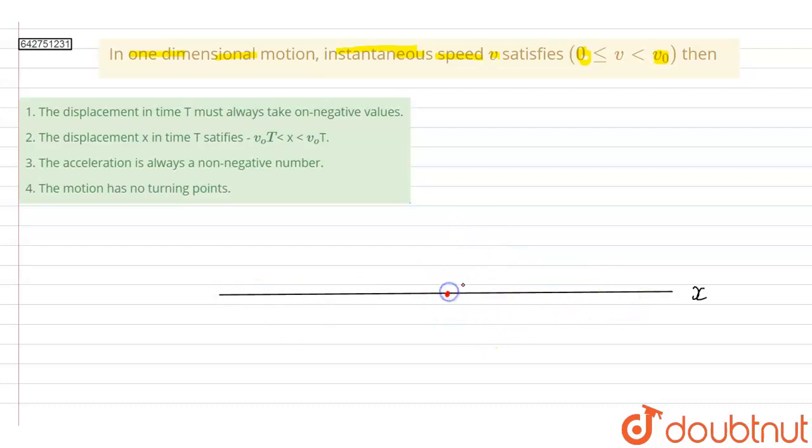Now here the particle can move in either of the directions, to the right side or to the left side. Let's say if this is the origin, so therefore this will be 0. So here this will be positive and here this will be negative x.